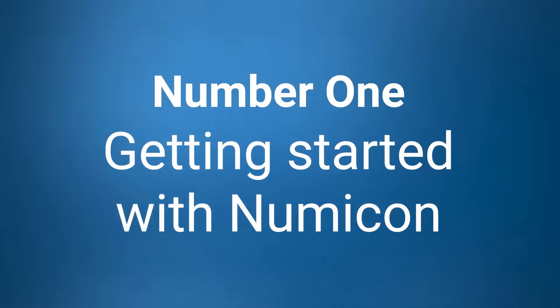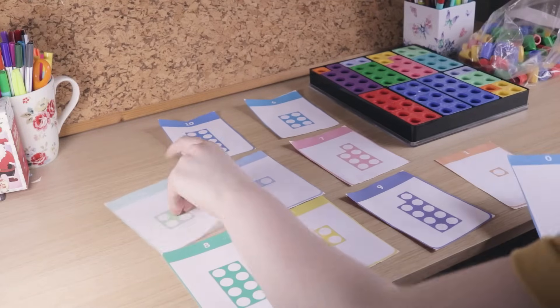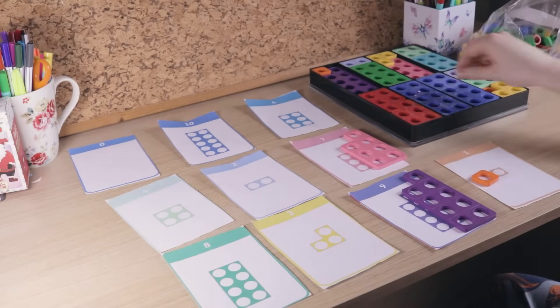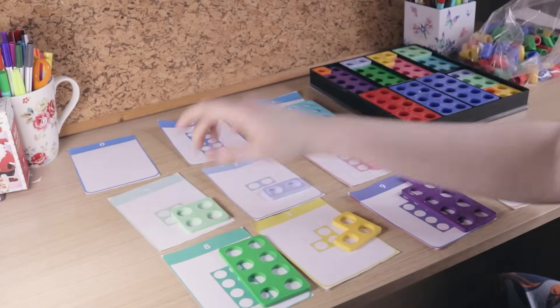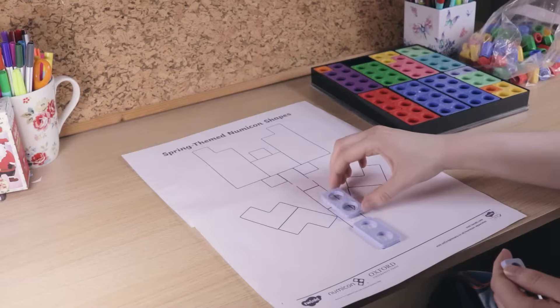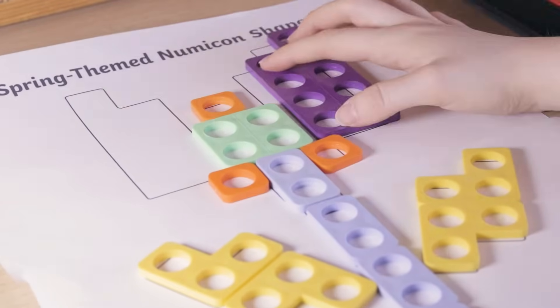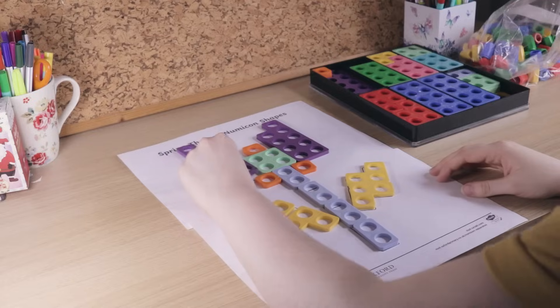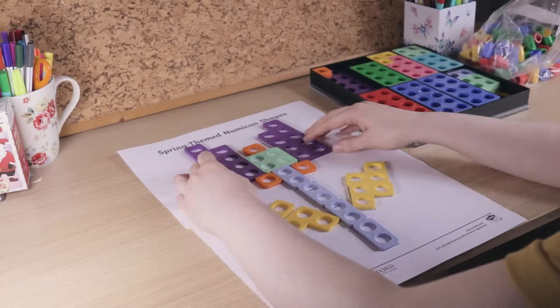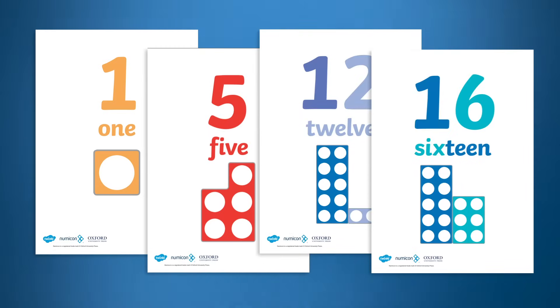For younger children there are lots of activities that you can do to help them get used to using Numicon shapes and understanding the different values. Give children shape matching activities so that they can get used to playing with the different Numicon shapes. This can also help them with their fine motor and visual skills. Having posters and playmats around the classroom can help learners to remember what number each shape represents, giving them a visual reminder.